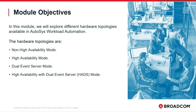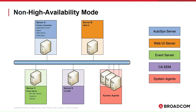High Availability with Dual Event Server Mode. The first topology is the Non-High Availability Mode or Single Server Mode, where each Autosys component is installed on a separate server. This configuration doesn't implement High Availability. Under this topology, we install Autosys components on Server A, Server B, and Server D. The system agents can be installed on several servers. On Server C, we have the Autosys database.